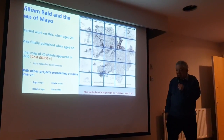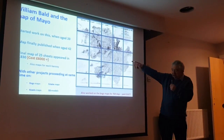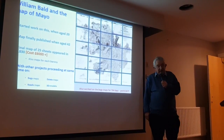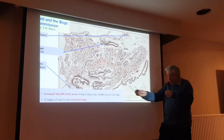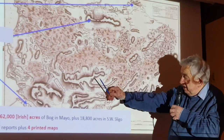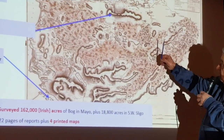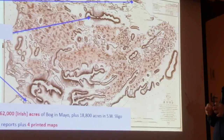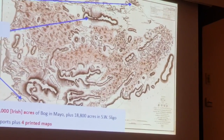The map started when Bald was 20 and finished when he was 42. The final map was in 25 sheets and cost £6,000, which is quite dear. The southwest of Mayo — the area from Killary Harbour right up to Croagh Patrick, the Sheefry Mountains — is included here, going into the lowlands. That's what the full engraved and printed version of Bald's map looks like.